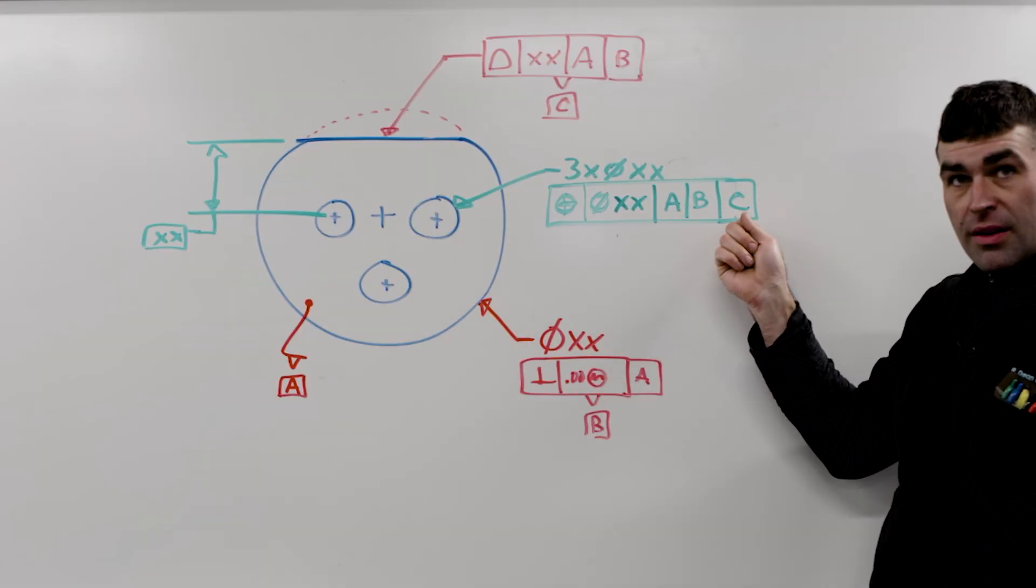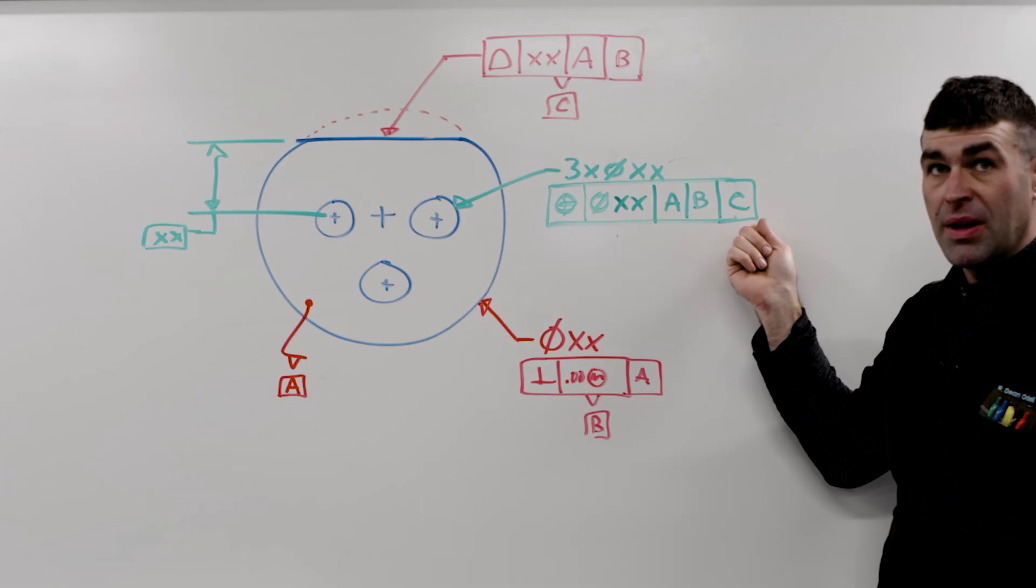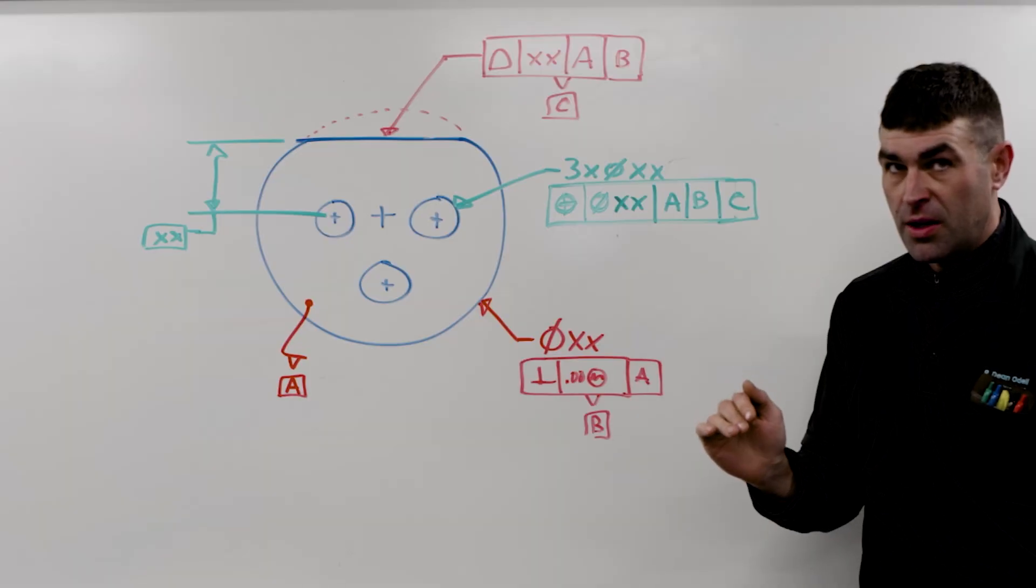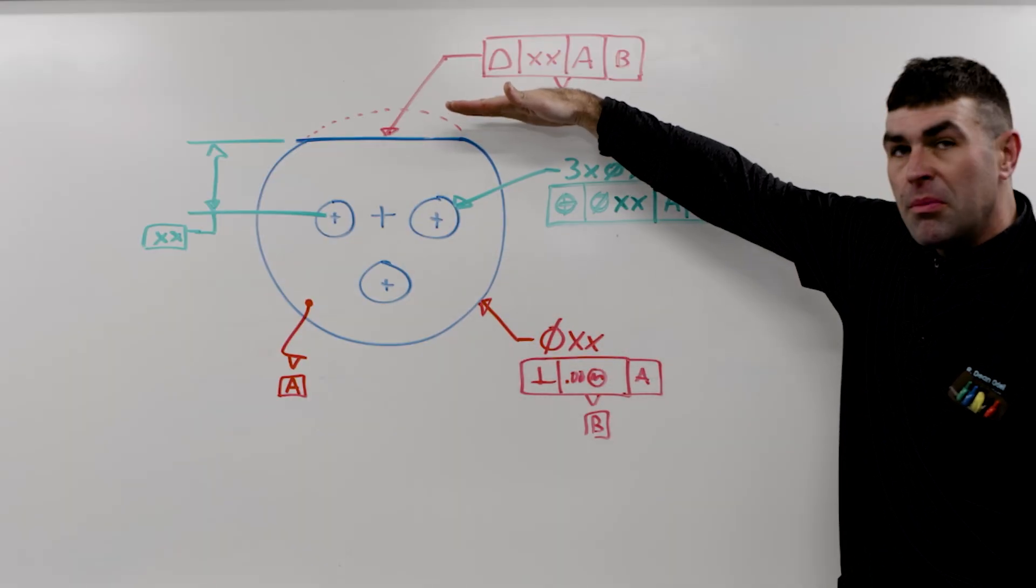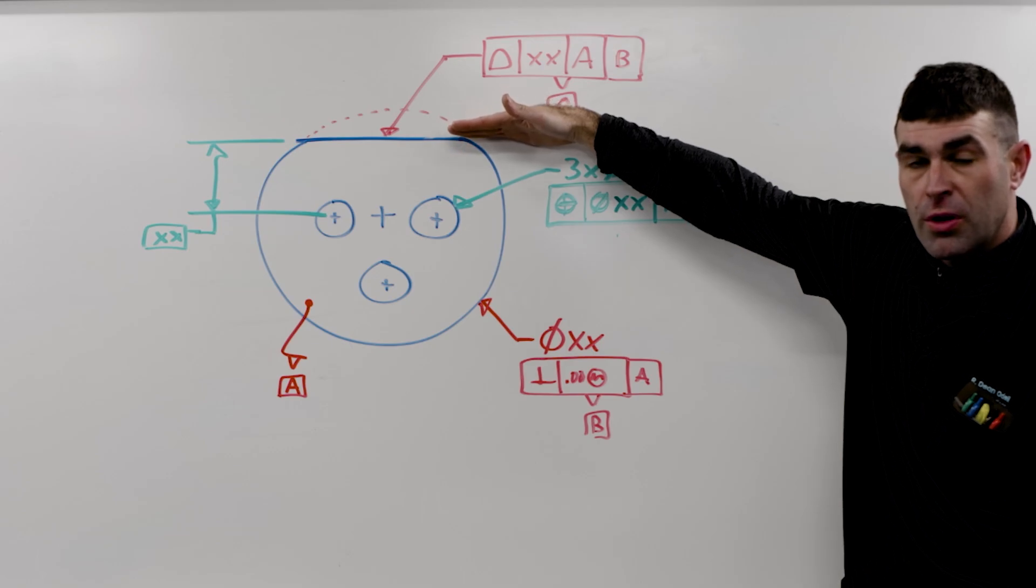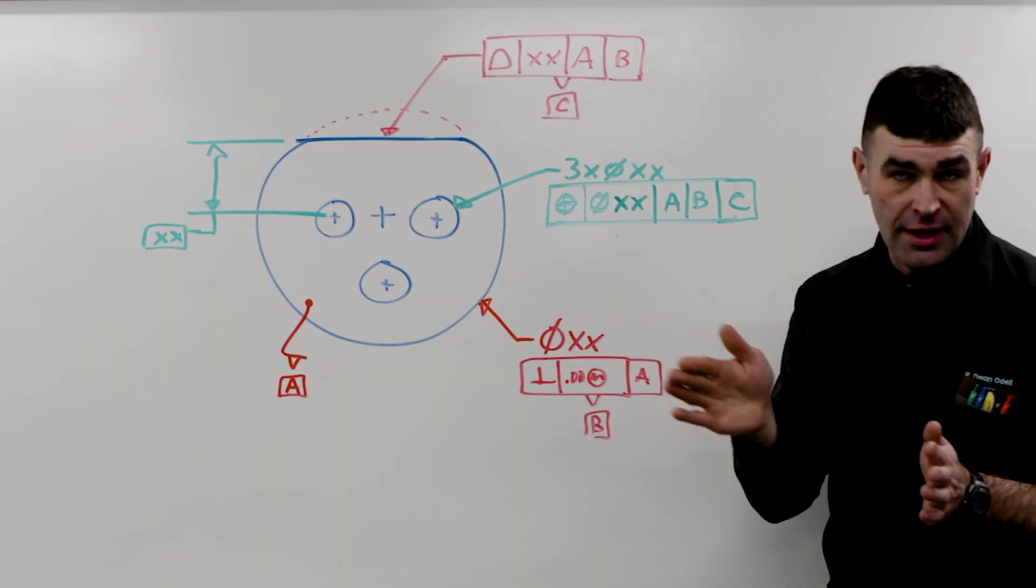So for that reason, we have to have a material condition with profile. So C, even though it's a surface, is RMB by default. So what that means is we're going to start at the maximum material boundary, and it's going to move toward the part until it gets full contact. So a moving thing.